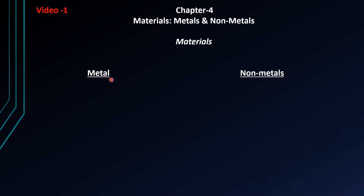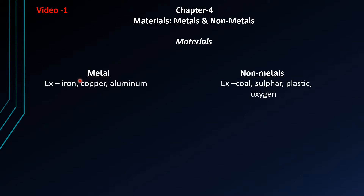You have seen many metals in your homes — like iron, copper, aluminium; these are metals. And non-metals you have also seen, like coal, plastic, etc. These are non-metals.